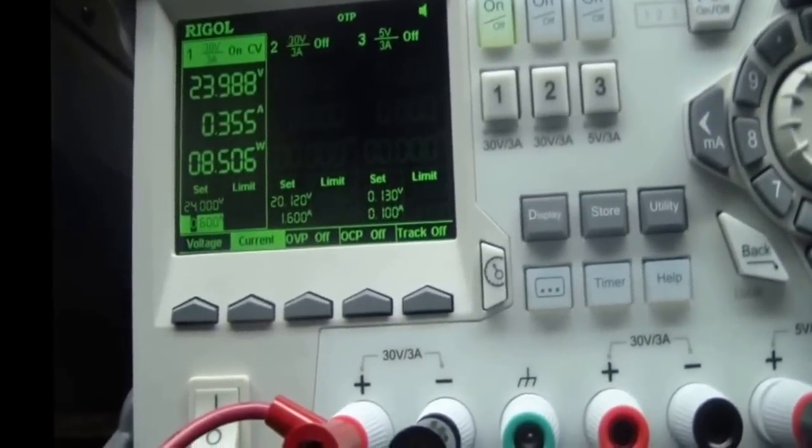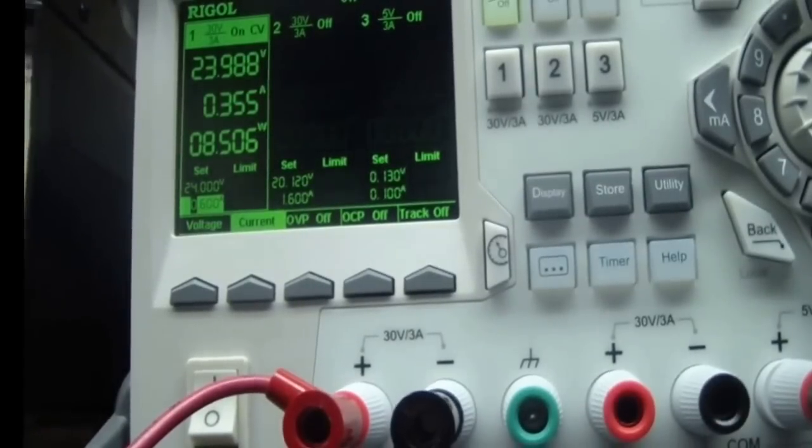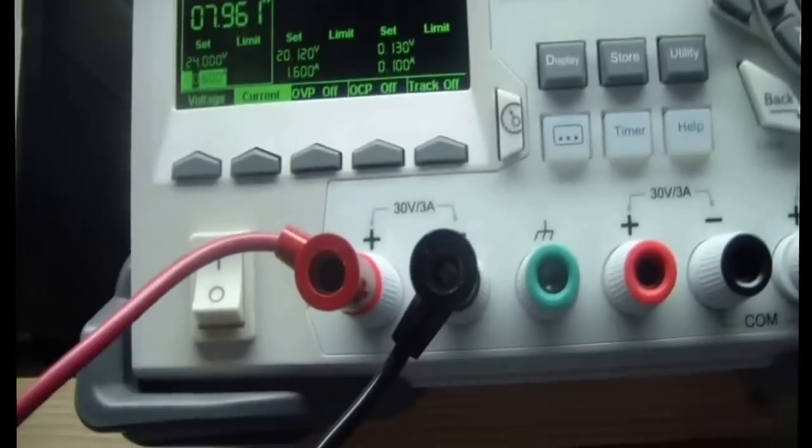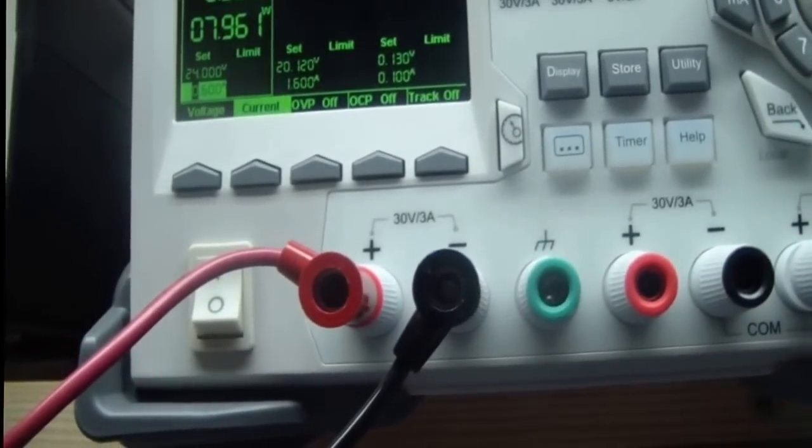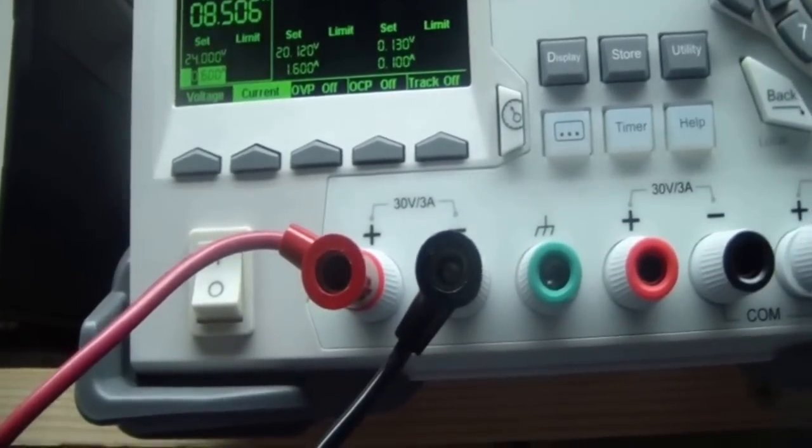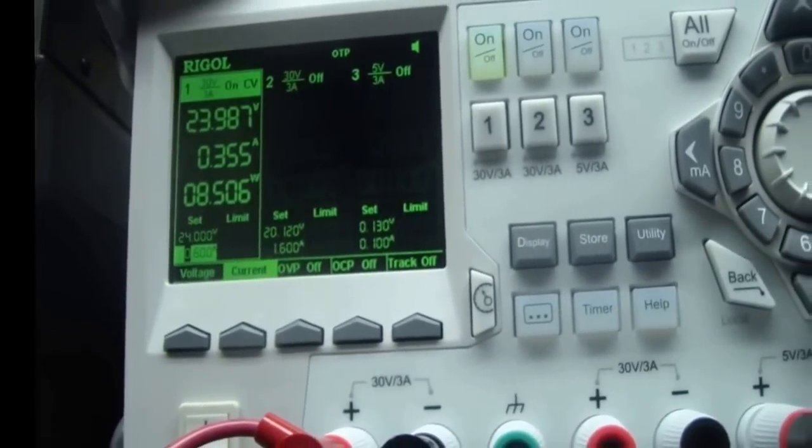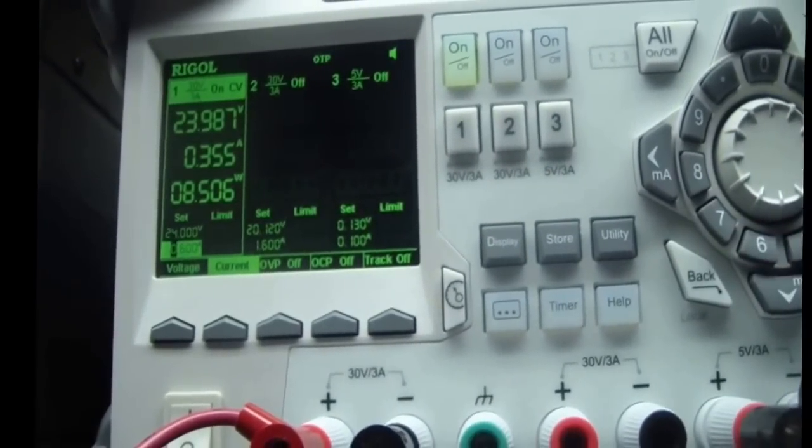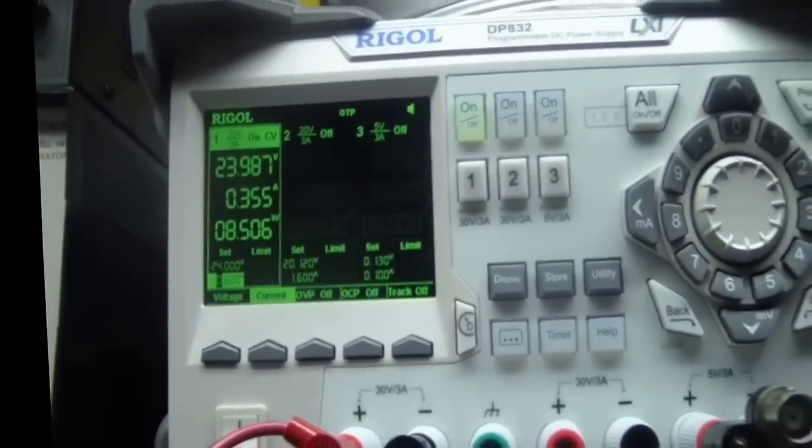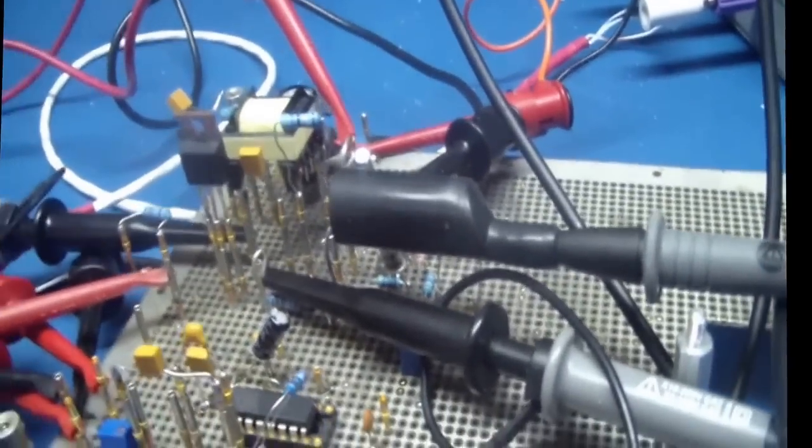If you notice, it's got a power of 7.9 watts. And as soon as I put the snubber, power went up approximately from 7.9 to 8.6 watts, so about 0.6 or 600 milliwatts. So this is how you test the transformer.